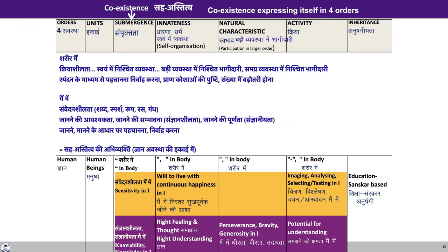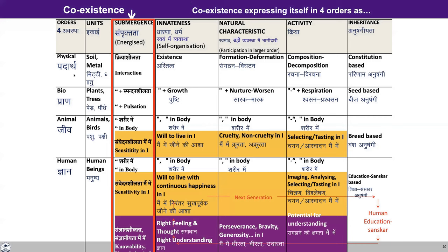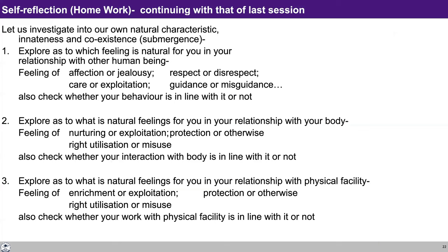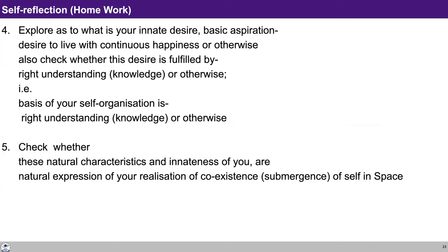The same thing is written here in Hindi. Now we have a homework. So the discussion that we started in the previous lecture, we are going to continue with that. You have to keep on doing that assignment from the last lecture. Explore as to which feeling is natural for you — try to find out whether it is affection or jealousy, respect or disrespect, care or exploitation, guidance or misguidance. Similarly, observe your natural feeling in relation with the body and in relation with the physical facility. Explore as to what is your innate desire or basic aspiration, and try to see whether it is the desire to live with continuous happiness or otherwise. And try to observe that all this is by virtue of expression of your realization of coexistence of self in space.